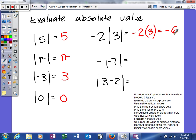Looking at the next one, we have the absolute value, or negative, the absolute value of negative 7. So it's going to be negative, and then the absolute value of negative 7 is 7. So our answer would be negative 7 here.